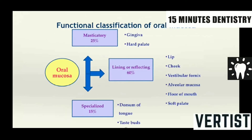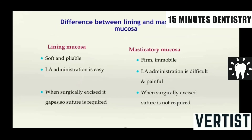Coming to the functional classification of oral mucosa. Based on function, they are classified as masticatory mucosa constituting 25%, lining or reflecting mucosa constituting 60%, and specialized mucosa constituting 15%. Masticatory mucosa includes the gingiva and the hard palate. Lining mucosa includes the lips, the labial and buccal mucosa, vestibular fornices, alveolar mucosa, floor of the mouth, and the soft palate. Specialized mucosa is basically the dorsal surface of the tongue and the taste buds.